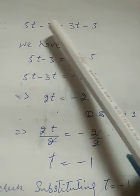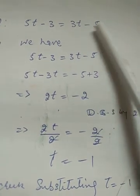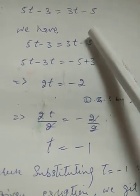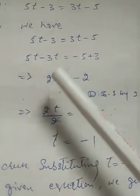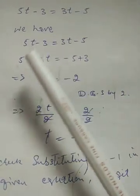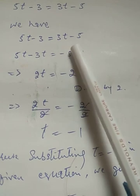Part two: 5t minus 3 is equal to 3t minus 5. We have 5t minus 3 is equal to 3t minus 5.